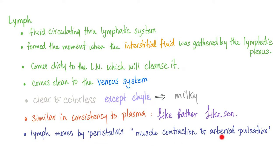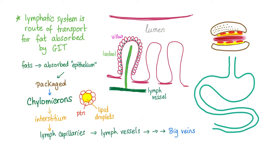Quick review on chyle. So you eat a fatty meal, it goes to the intestine. In the small bowel, you have the villi. Here is the lacteal, which is a lymphatic vessel. We absorb fat and package it into chylomicrons — lipid droplets in the center surrounded by proteins. They go to the interstitium between the cells, lymph capillaries, lymph vessels, lymph nodes, all the way back to the big veins.